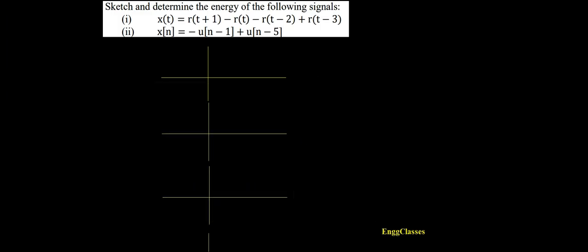Hello everyone, welcome to NG Classes' YouTube channel. In this video lecture we consider, sketch, and determine the energy of the following signals. We have two signals: x(t), which is a continuous time signal, and x[n], which is a discrete time signal. x(t) is r(t+1) minus r(t) minus r(t-2) plus r(t-3) — basically four ramp signals which are added or subtracted.